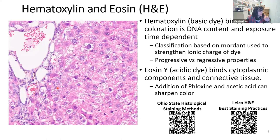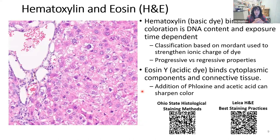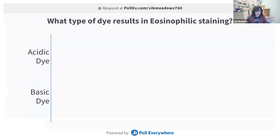Eosin is the acidic dye that binds cytoplasmic components and connective tissue. When floxine and acetic acid are added, it can sharpen the color. You can see red blood cells as a bright magenta-pink, while cytoplasmic features appear in lighter gradient shades of pink. To summarize: hematoxylin (basic dye) binds DNA and gives shades of lavender and purple; eosin (acidic dye) binds cytoplasmic components and connective tissue like collagen, with color sharpened by the addition of floxine or acetic acid.